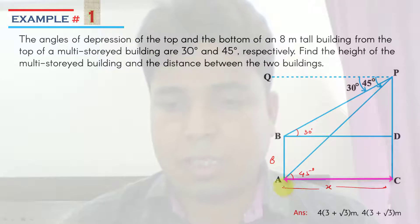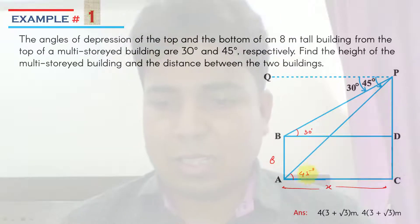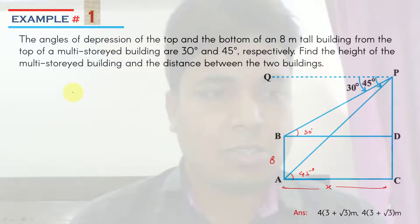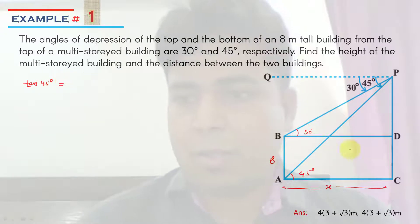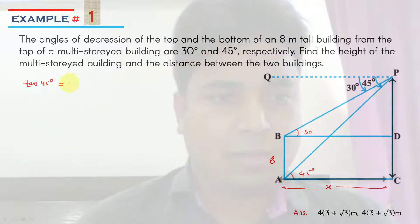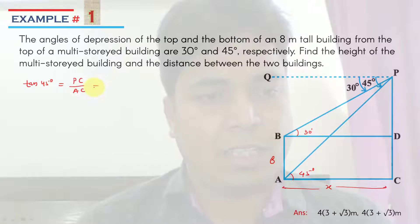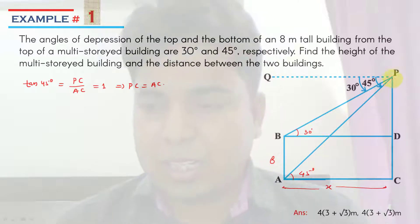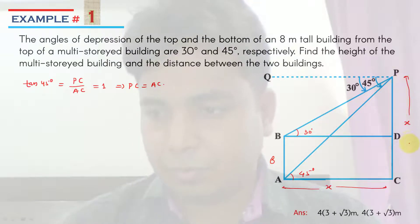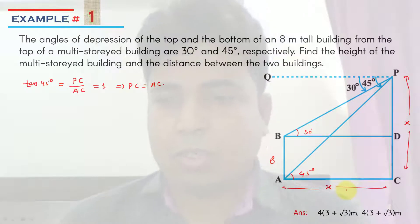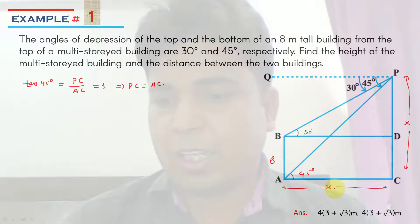Since this is a 45 degree angle, we have a relation: tan 45° = PC upon AC, and tan 45° equals 1. So this implies PC is equal to AC. So PC length is equal to AC, which is x, so the height will also be x in length. BD will also be x in length.